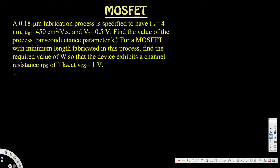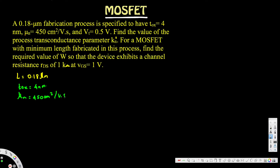Let's look at the given information. We have the length L equal to 0.18 micrometers, the oxide thickness tox equal to 4 nanometers, μn equal to 450 centimeter squared per volt-second, and V_threshold equal to 0.5 volts.